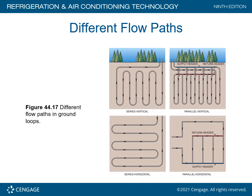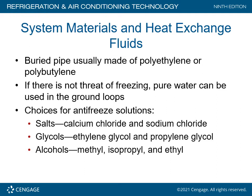Different flow paths in ground loops include the series vertical loop, the parallel vertical loop with two loops and more piping, a series horizontal configuration requiring more land, and a parallel horizontal with more piping involved. The choice depends on how much room is available and whether building codes allow the installation in the proposed area.